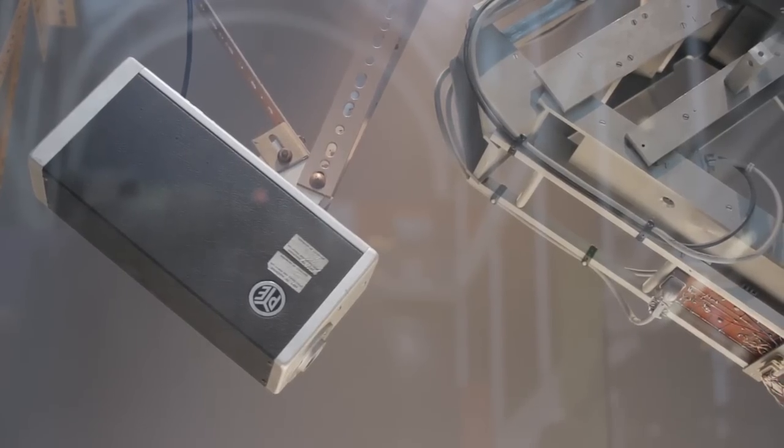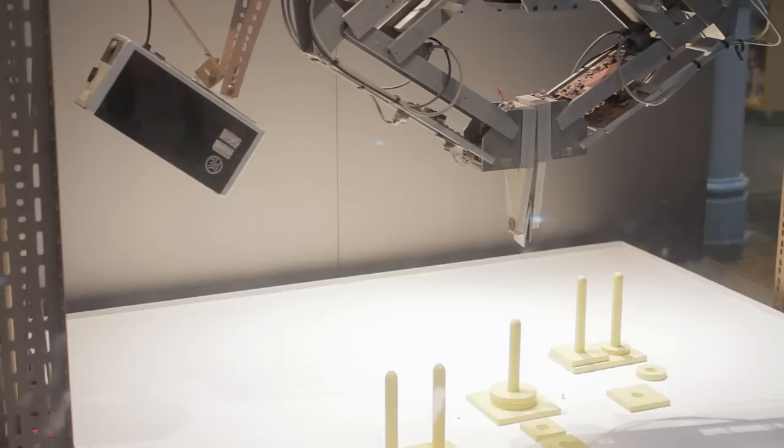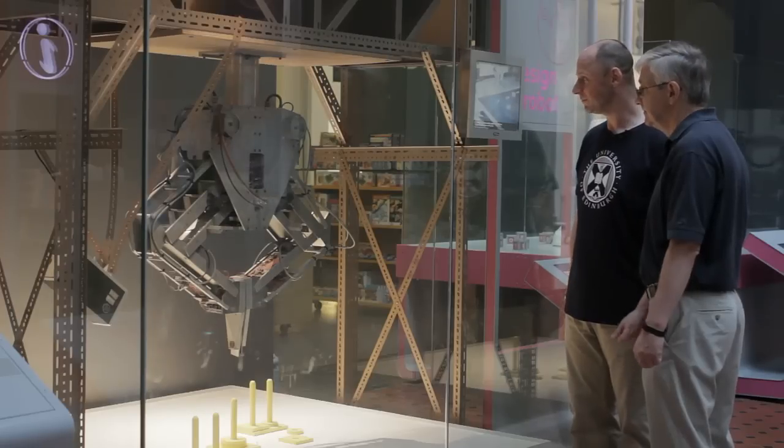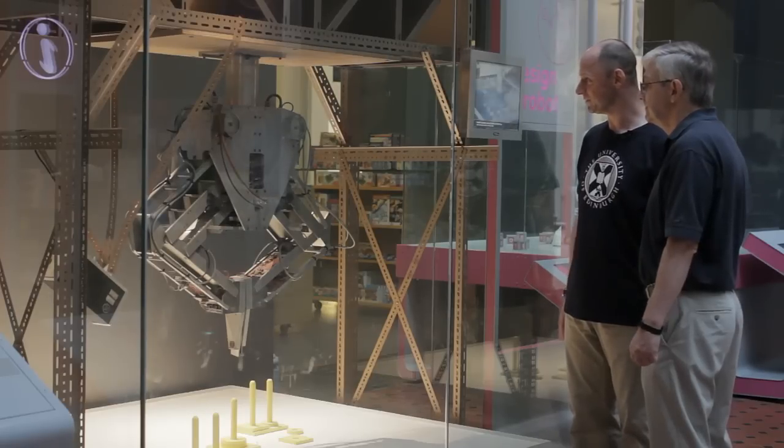Instead of the robot moving to reach objects, the platform underneath the robot was shifted instead. FREDDY was demonstrated on flexible assembly tasks involving simple toy cars and boats.